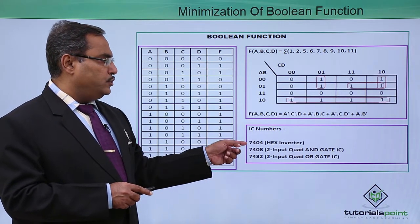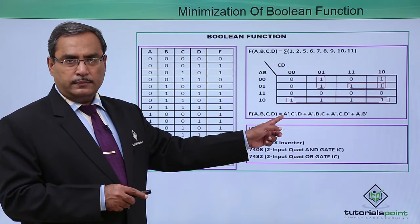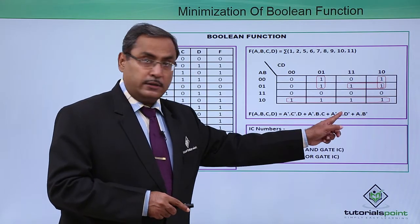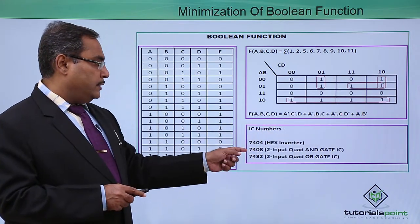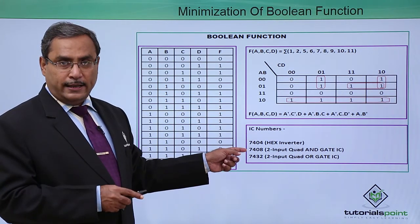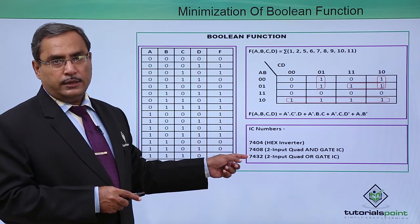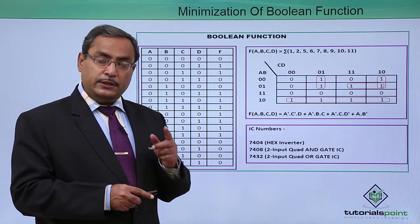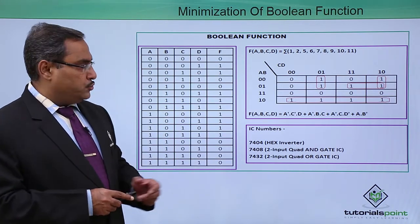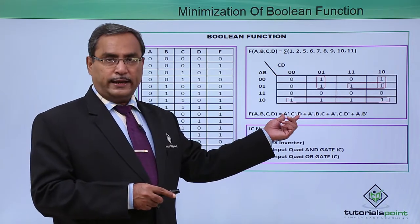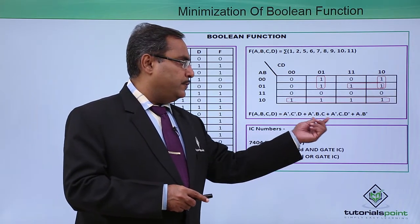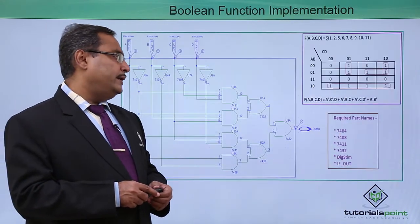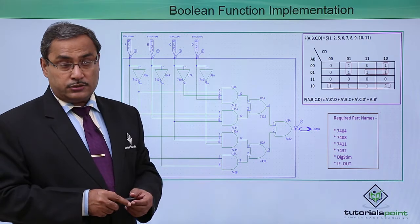From the Karnaugh map, I require A bar, B bar, C bar, and D bar — so 4 NOT gates are required. Then we require AND gates: I require 3-input AND gates and one 2-input AND gate. In our PSPY software we are having 3-input AND gates also. I require three 3-input AND gates and one 2-input AND gate.